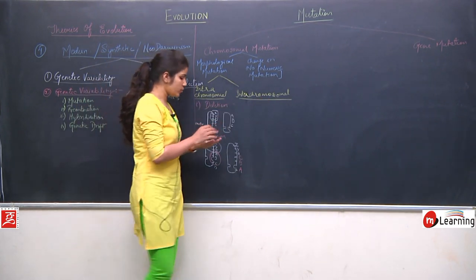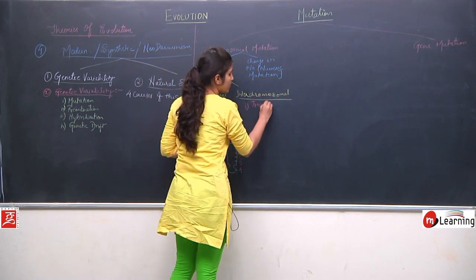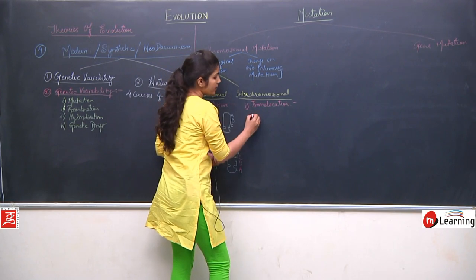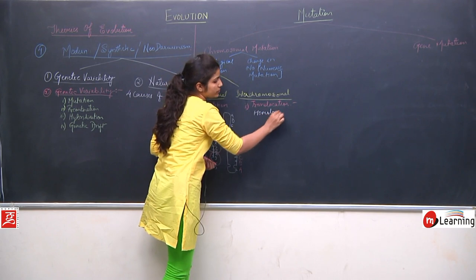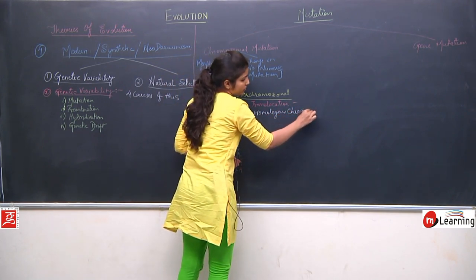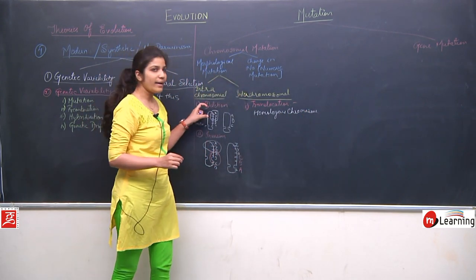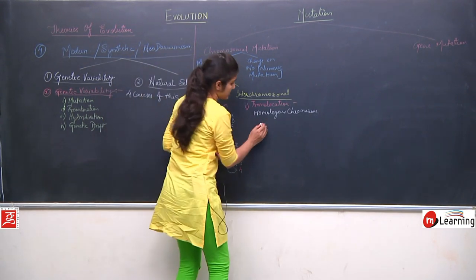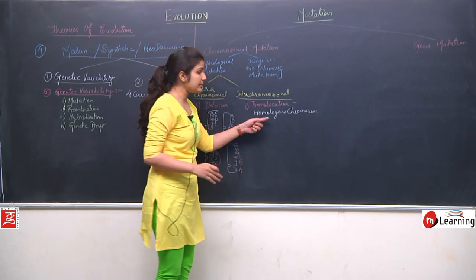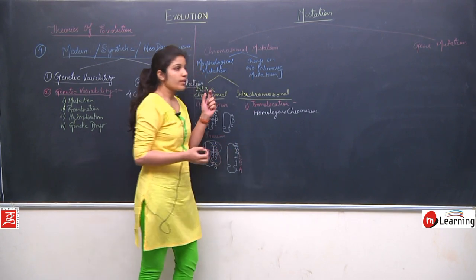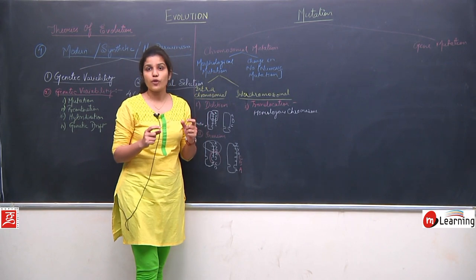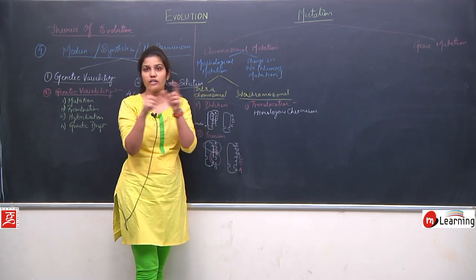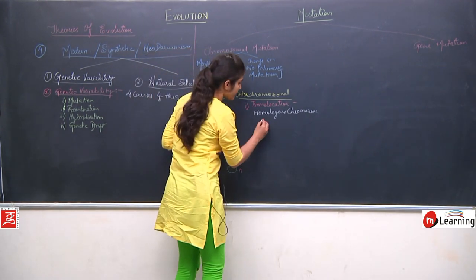The next one is interchromosomal mutation. The first type is translocation, which happens in homologous chromosomes. When one part of a chromosome and another part from a homologous chromosome are removed and exchanged between the two chromosomes, it is called translocation.